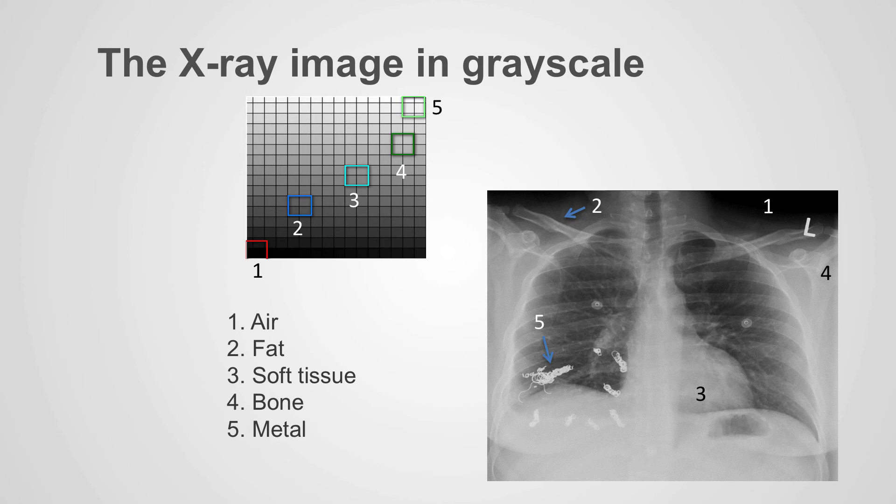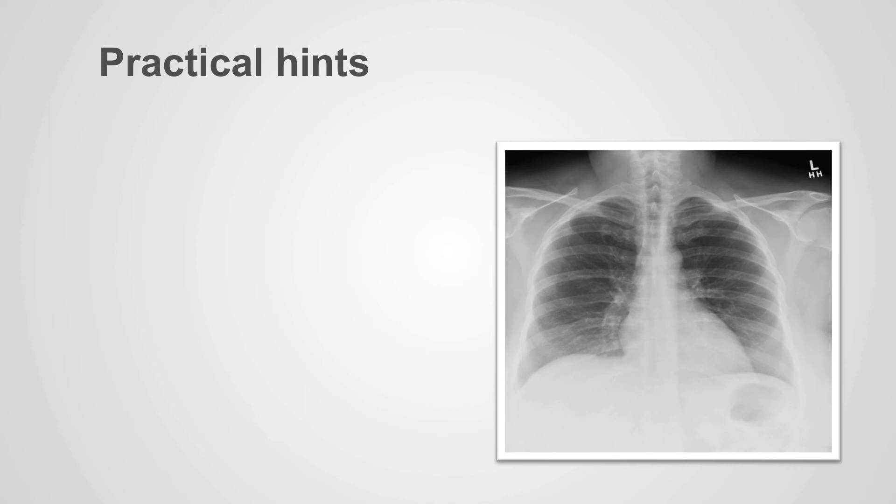The fourth density which is not natural to the human body is metal density and we can identify these metal coils that have been inserted into this patient for treatment of vascular malformations. So some practical hints related to the grayscale of an x-ray examination. Looking at this image, we see that there's very black areas above the shoulders. This represents air that is within the room, so we can expect that the air within the lungs will also look black.